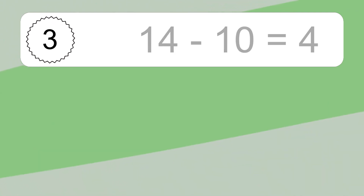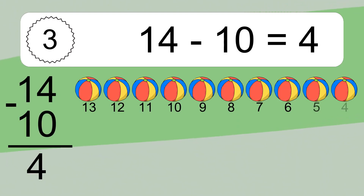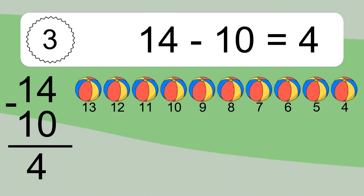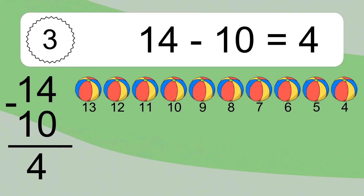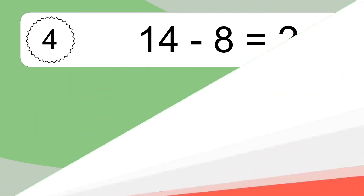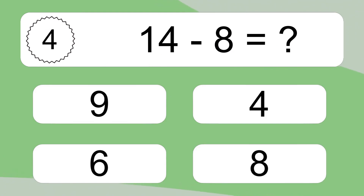14 minus 10 equals what? 14 minus 10 equals 4. Let's count it: 13, 12, 11, 10, 9, 8, 7, 6, 5, 4.